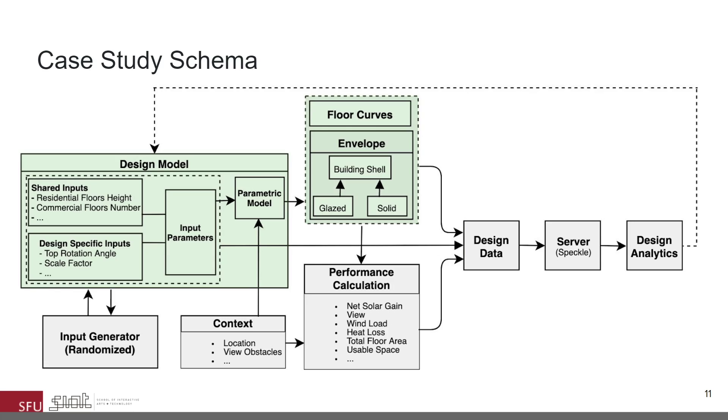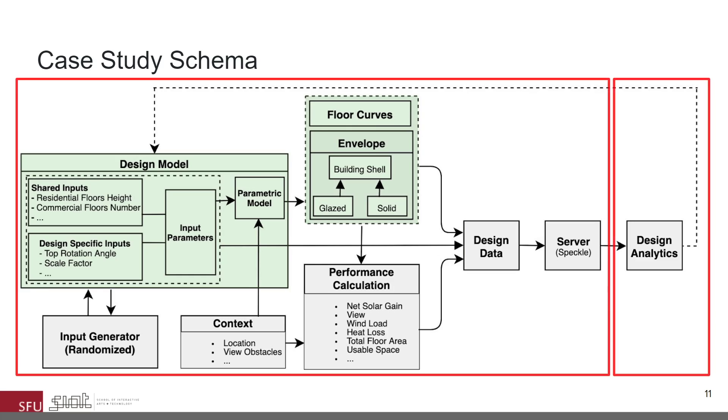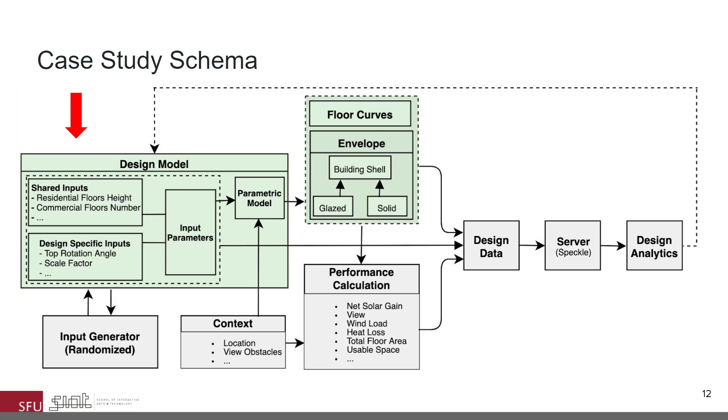This diagram shows the case study setup, and the components within the red box to the left are the main setup, while the one on the right is our intervention. Looking at each model, the first is the parametric model that specifies and generates geometries, provided by the design teams. The second is the input generator, which receives parameters and changes the input values algorithmically to automate serial generation of alternatives.